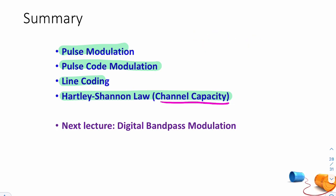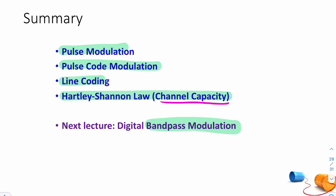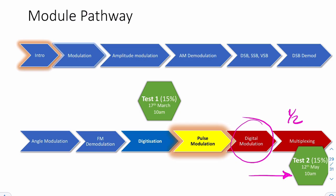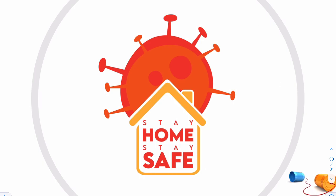Next week we'll look at bandpass modulation — digital communication with a carrier, i.e., wireless modulation. It's very similar to what we've already covered: AM, FM, and PM, but this time for digital signals. We've literally got two lectures to go — the last one is a mini lecture, and digital modulation is our last substantial lecture. Make sure you're ready for the class test on the 12th of May. Stay home and stay safe.